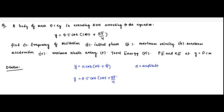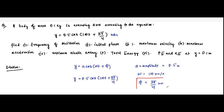Comparing with the standard form, the amplitude A = 0.5 meters. The angular frequency ω = 100 radians per second. The initial phase angle φ = 3π/4 radians. So the initial phase — our second part — is already obtained: 3π/4 radians.